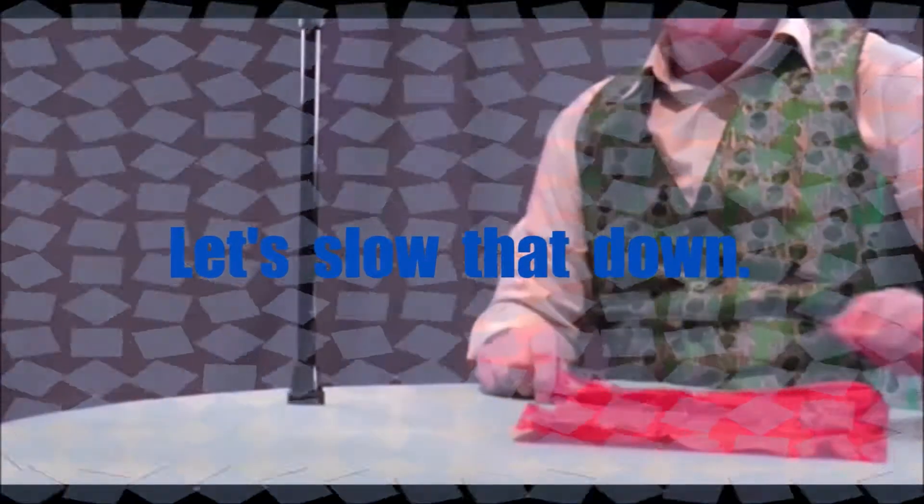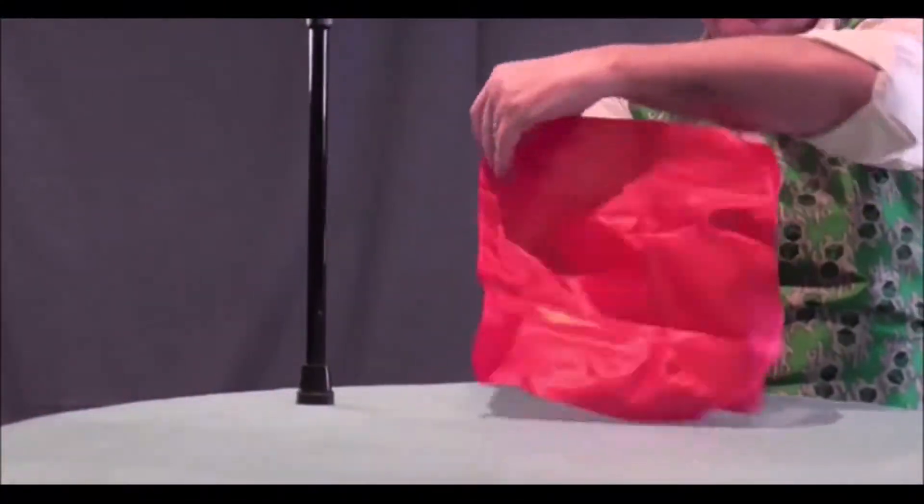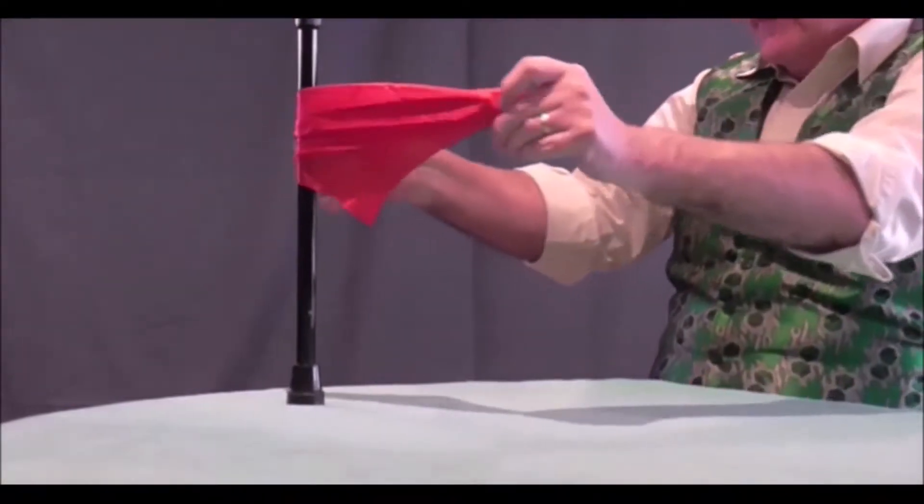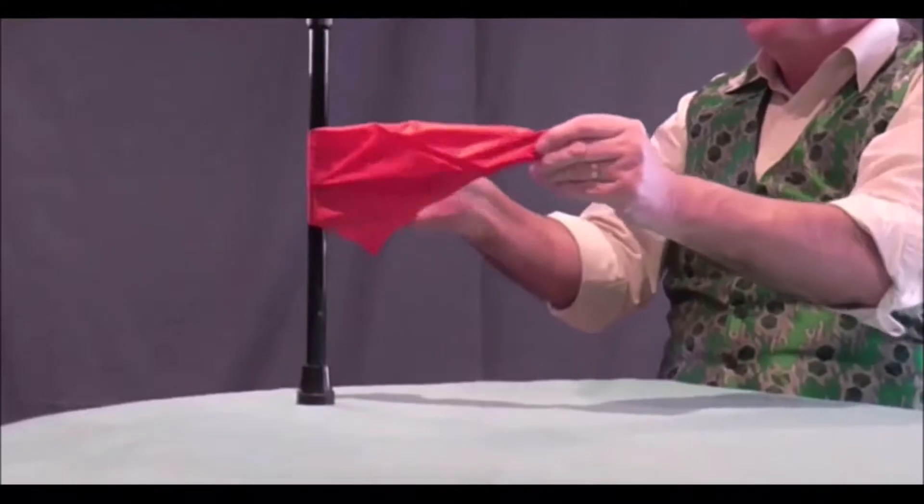We'll slow this down and I'll show you exactly the same one again. The scarf is placed around the front of the cane, and slowing it right down to about half speed.